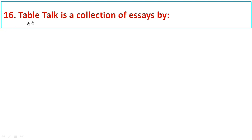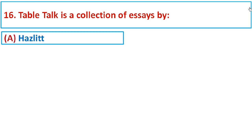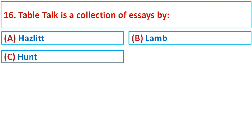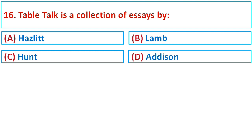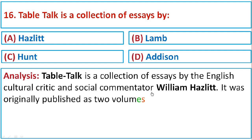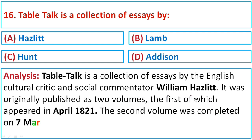Question number sixteen: Table Talk is a collection of essays by Option A: Hazlitt, Option B: Lamb, Option C: Hunt, or Option D: Addison. Table Talk is a collection of essays by the English cultural critic and social commentator William Hazlitt. It was originally published in two volumes, the first appearing in April 1821 and the second completed on 7th March 1822. The correct option is A: Hazlitt.